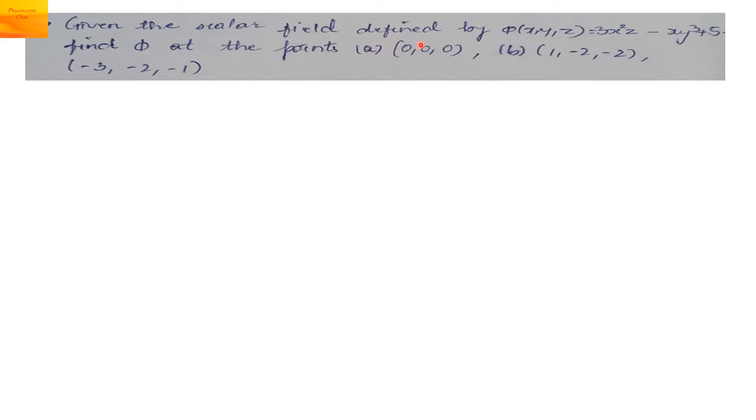We will see a numerical problem based on scalar field. Given the scalar field defined by Phi of X, Y, Z is equal to 3X square Z minus XY cube plus Z cube, you have to find the value of this function Phi at the point which is represented by the coordinates 0, 0, 0.